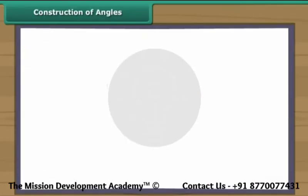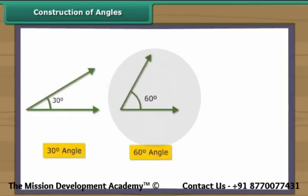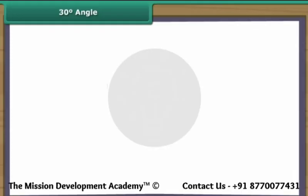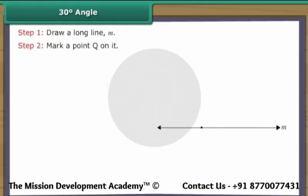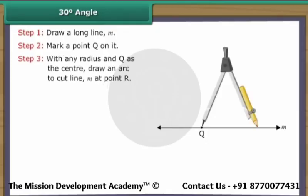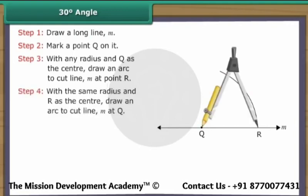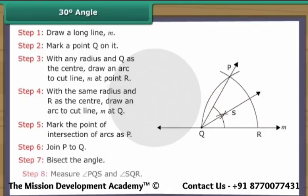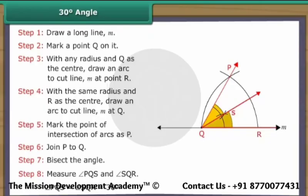Construction of angles. Let us now construct some special angles: 30 degrees, 60 degrees, and 120 degrees. Construction of 30 degree angle. Draw a long line M and mark a point Q on it. With any radius and Q as the center, draw an arc to cut line M at point R. With the same radius and R as the center, draw an arc to cut the previous arc. Mark the point of intersection of arcs as P. Join P to Q. Bisect the angle. Angle PQS is equal to angle SQR, which is equal to 30 degrees.